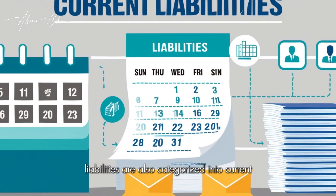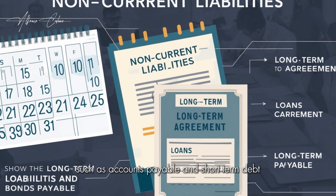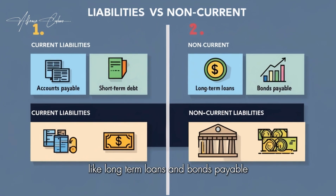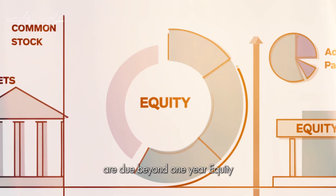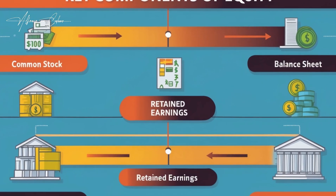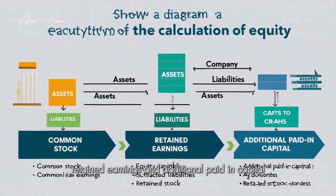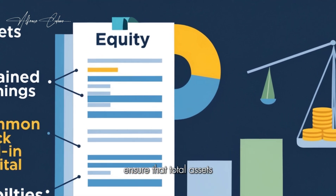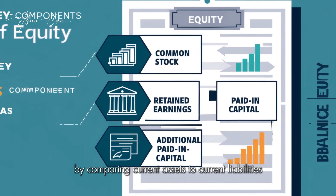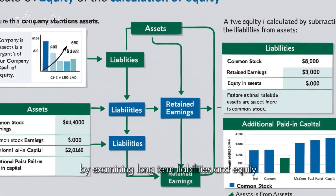Liabilities are also categorized into current and non-current. Current liabilities, such as accounts payable and short-term debt, are obligations due within a year. Non-current liabilities, like long-term loans and bonds payable, are due beyond one year. Equity represents the shareholder's stake in the company after subtracting liabilities from assets. Key components of equity include common stock, retained earnings, and additional paid-in capital. When reading a balance sheet, ensure that total assets equal total liabilities plus equity, analyze liquidity by comparing current assets to current liabilities, and assess financial stability by examining long-term liabilities and equity.